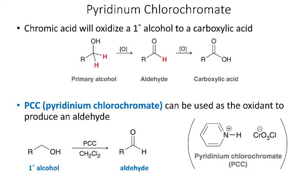If we want to stop at the aldehyde, we can use a more selective oxidizing agent. One example is pyridinium chlorochromate, abbreviated PCC. If we react PCC with a primary alcohol, it will stop at the aldehyde and won't go all the way to the carboxylic acid.